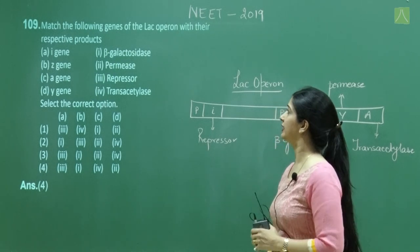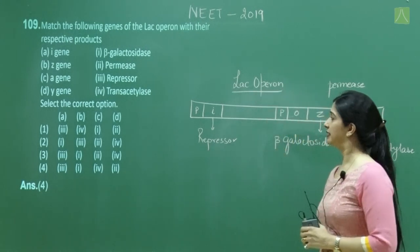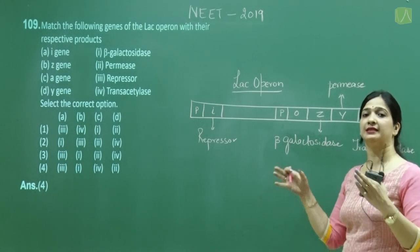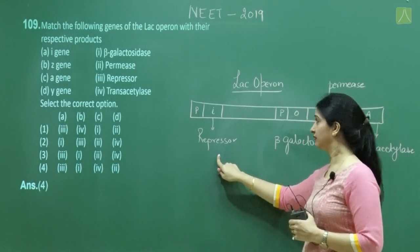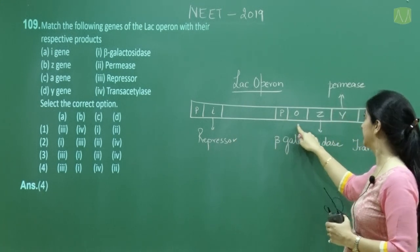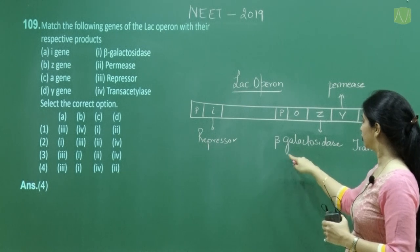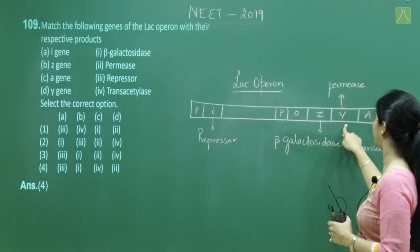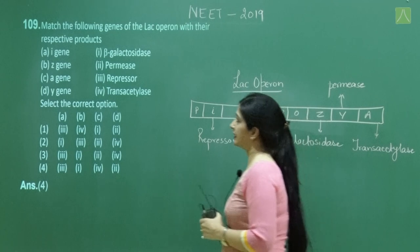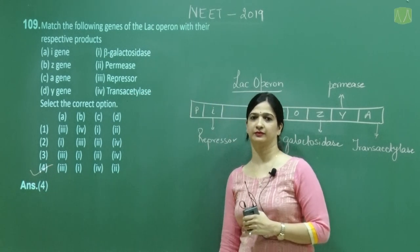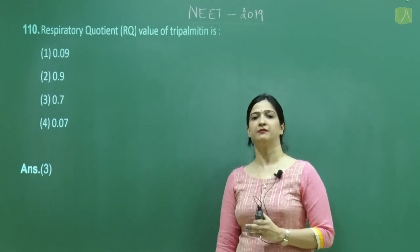Question number 109: Match the genes of the lac operon with their respective products. In the lac operon, the i gene codes for the repressor, p is the promoter, o is the operator, and the structural genes z, y, and a code respectively for beta-galactosidase, permease, and transacetylase. The correct answer is option 4.